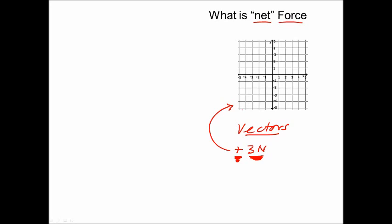It goes back to the coordinate system, which has two axes: a y-axis and an x-axis. The center is referred to as the origin. If we imagine a force acting on that origin, we can look at it pushing in four different directions. A force acting to the right along the x-axis is positive, since the numbers on that part of the axis are all positive. A force acting to the left would be negative.